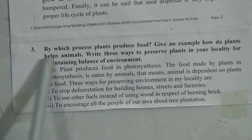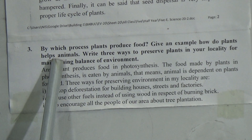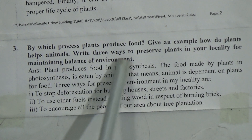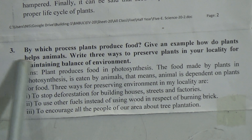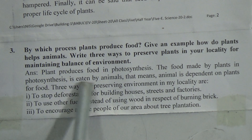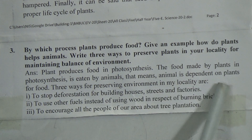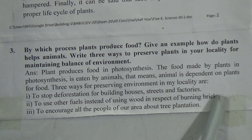CBQ number 3: By which process do plants produce food? Give an example. How do plants help animals? And write 3 ways to preserve plants in your locality for maintaining balance of the environment. Answer: Plants produce food through the photosynthesis process. The food made by plants in photosynthesis is eaten by animals — that means animals are dependent on plants for food. Three ways for preserving the environment in my locality are: Number 1 — to stop deforestation for building houses, streets and factories. Number 2 — to use other fuels instead of using wood for burning bricks. Number 3 — to encourage all the people of our area about tree plantations.